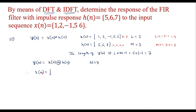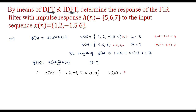Therefore the new X(n) is {1, 2, -1, 5, 6, 0, 0}. Similarly, the new H(n) is {5, 6, 7, 0, 0, 0, 0}. Both sequences now have length 7.